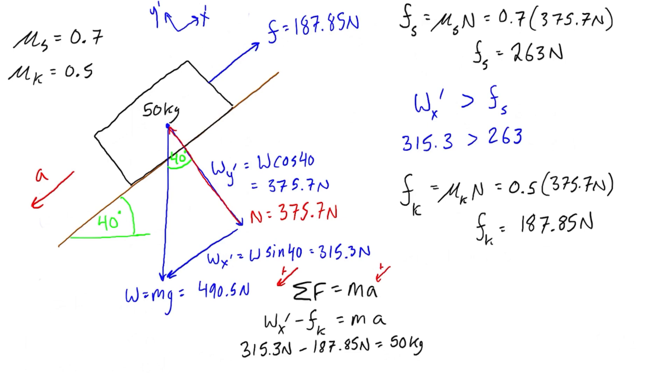And we can just do that simplification. The subtraction gives us 127.45 newtons divided by 50 kilograms is going to be equal to a. And if we again just do that division, we're going to find that acceleration is 2.549 meters per second squared in the negative x direction, basically down the ramp like that.